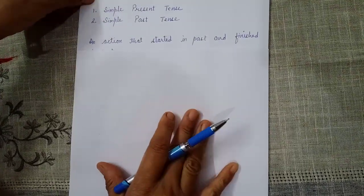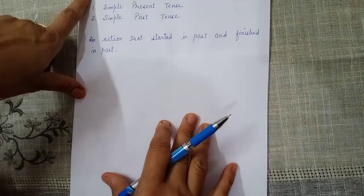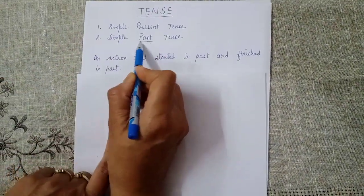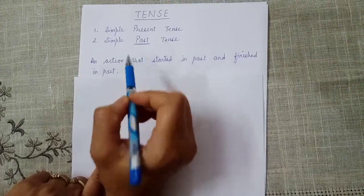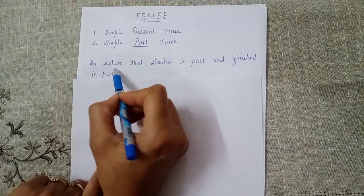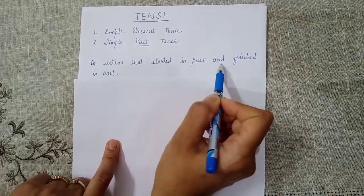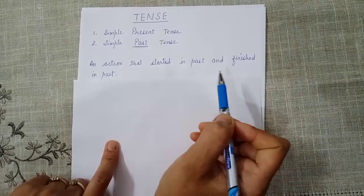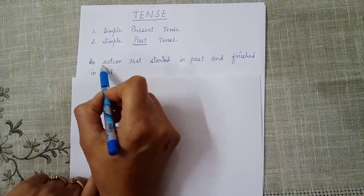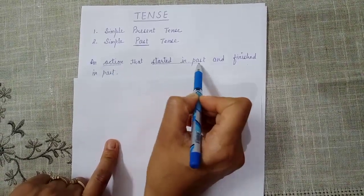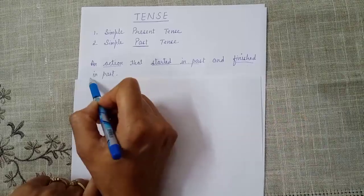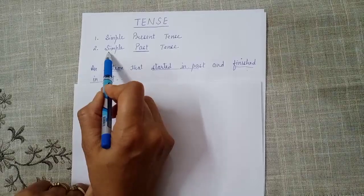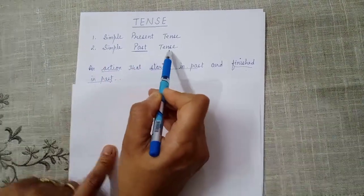First of all we must know what is simple past tense. As the word past denotes, there is an action which began in past and it finished in past. It is not coming in present. So an action that started in past and finished in past — such kind of actions we denote with this tense, simple past tense.